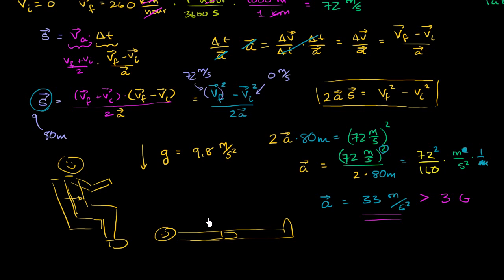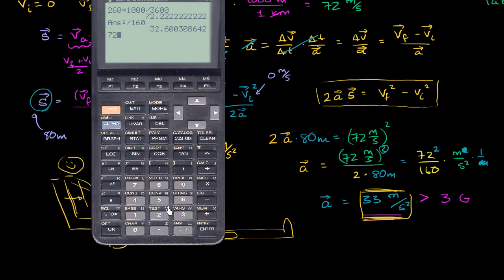The other question is how long the catapult launch takes. Accelerating at 33 m/s², after one second the pilot is going 33 m/s, after two seconds 66 m/s — so it takes a little more than two seconds. Dividing 72 meters per second by 33 gives approximately 2.18 seconds to be catapulted off the carrier.